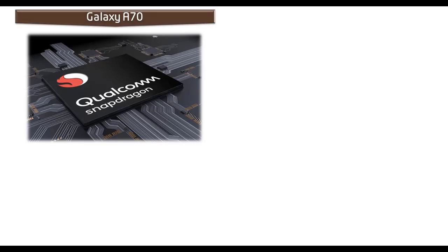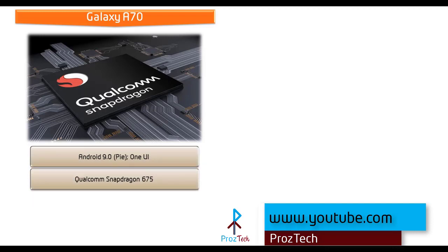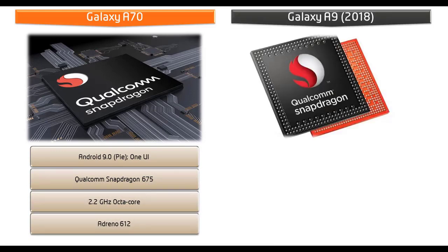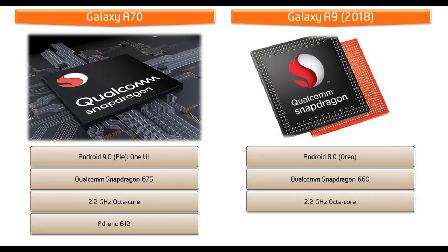Samsung Galaxy A70 comes with Android 9.0 Pie, uses One UI interface, and is powered by Qualcomm Snapdragon 675 processor with 2.2 GHz Octa-Core and GPU Adreno 612. Whereas Galaxy A9 2018 runs Android 8.1 Oreo and is powered by Qualcomm Snapdragon 660 processor with 2.2 GHz Octa-Core and Adreno 512.